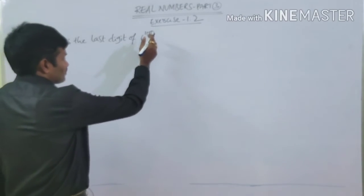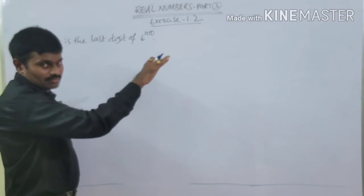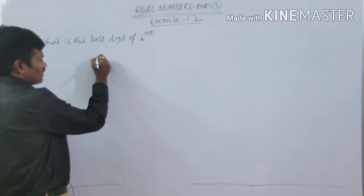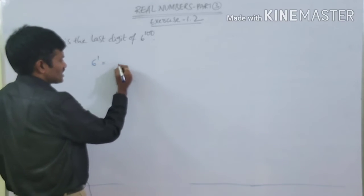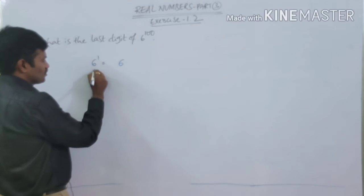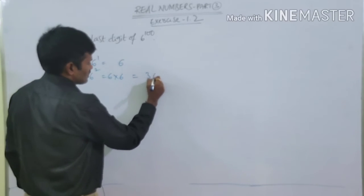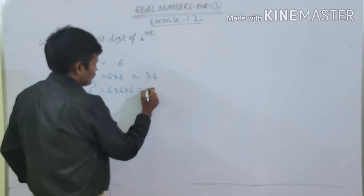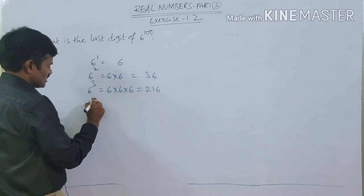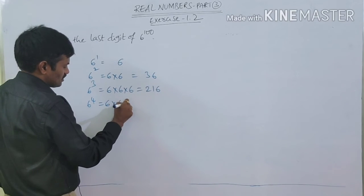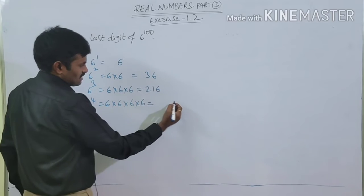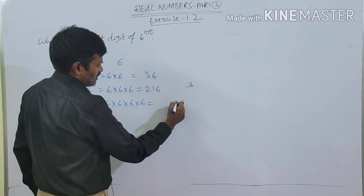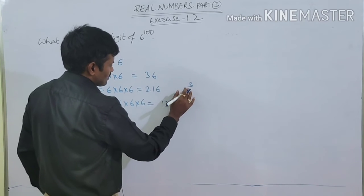See, 6^100 is given. Let us observe a pattern. 6^1 = 6, unit digit is 6. 6^2 = 36, unit digit is 6. 6^3 = 216, unit digit is 6. If you expand to any power, you will see the unit digit is always 6.